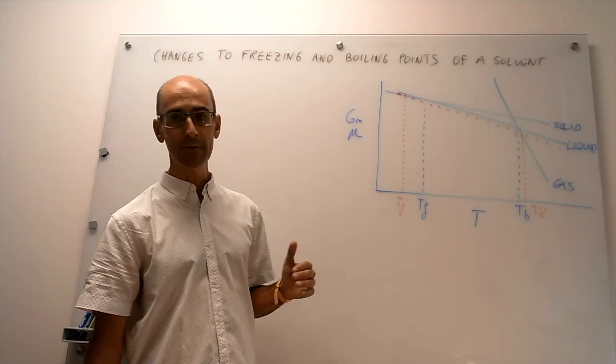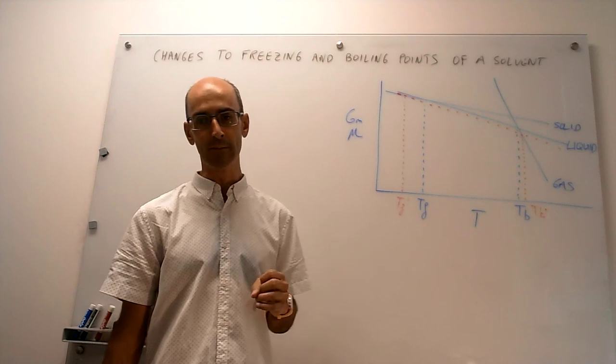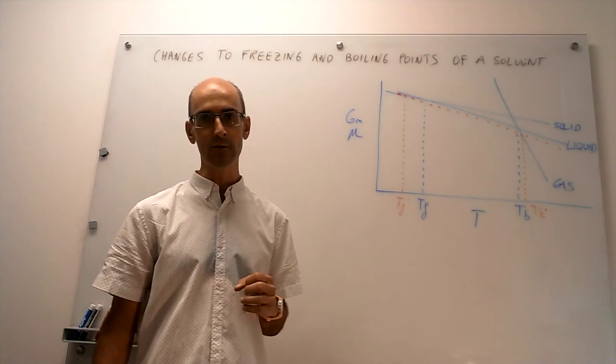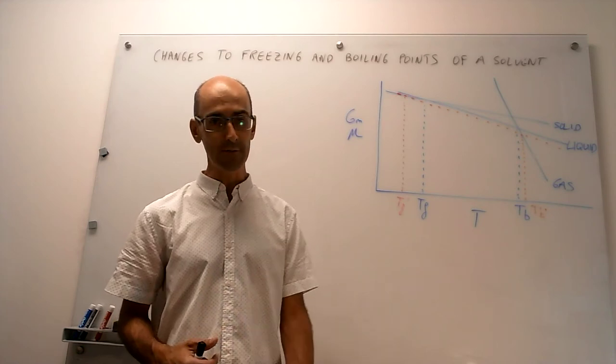And this is what we have here. This is how the molar Gibbs energy of a solvent, those are the blue lines, changes when you add a non-freezing, non-volatile solute to that solvent.